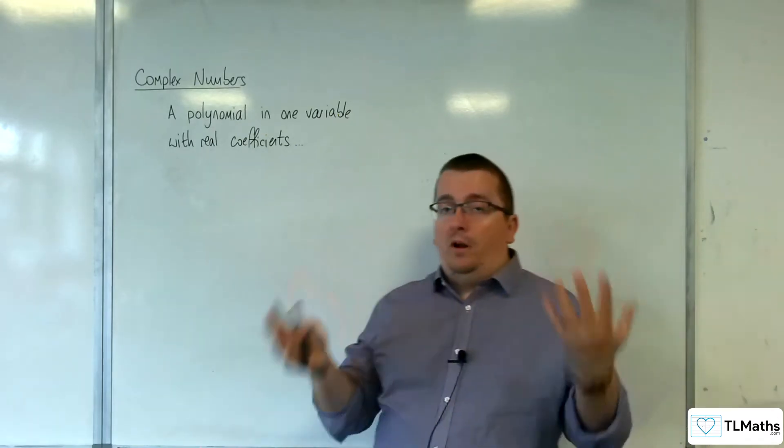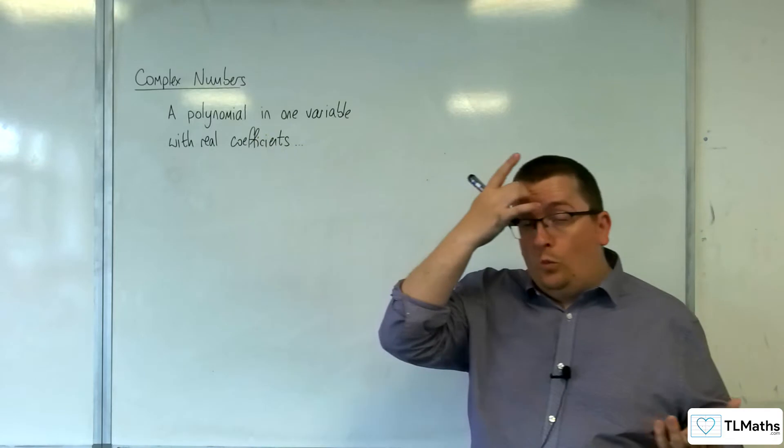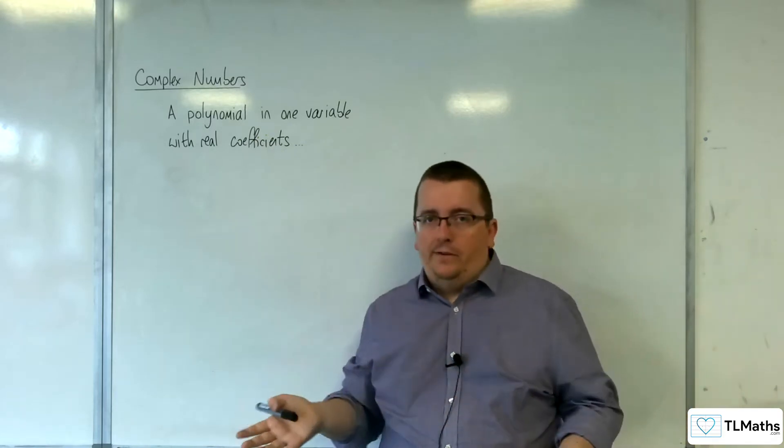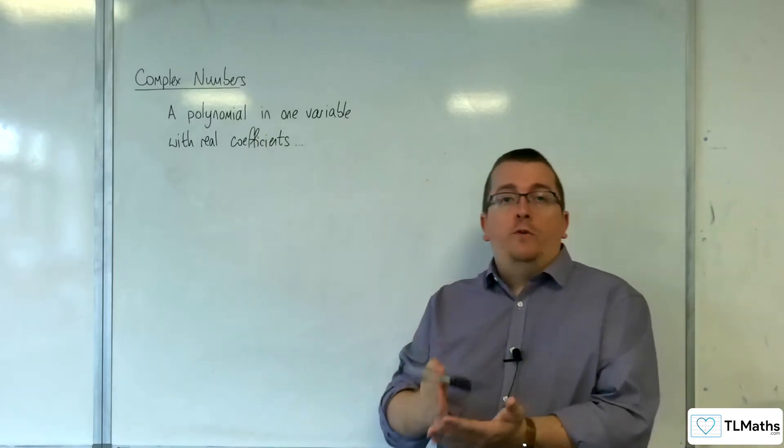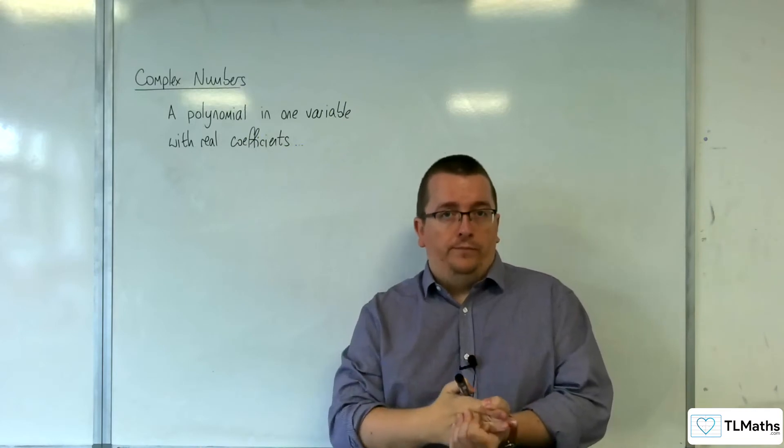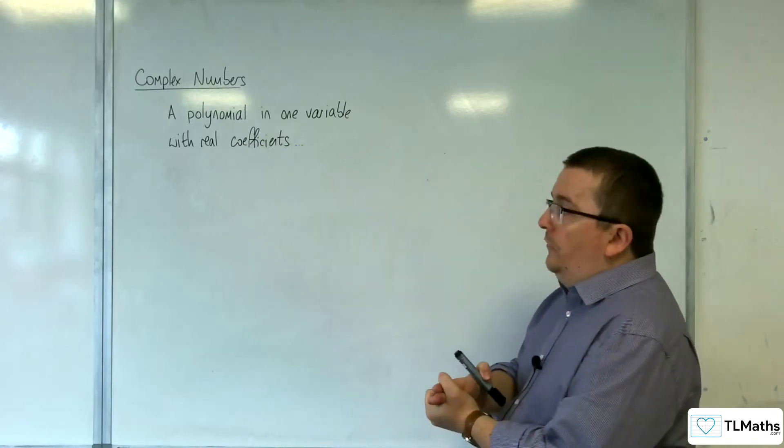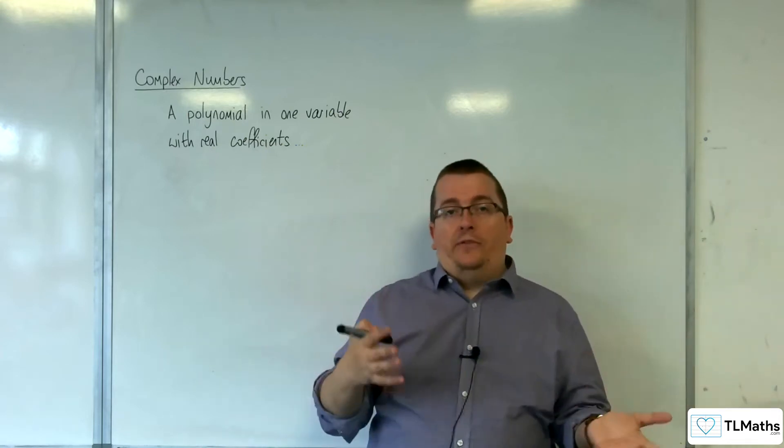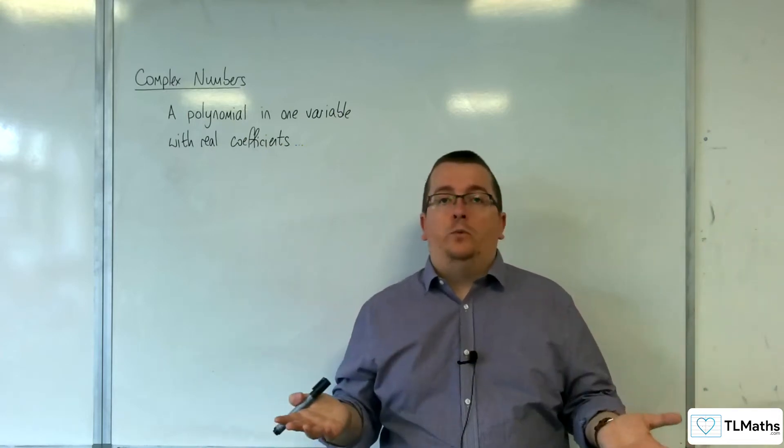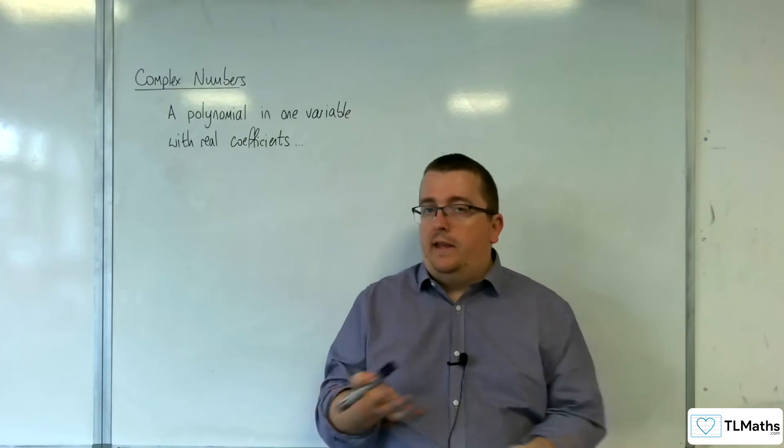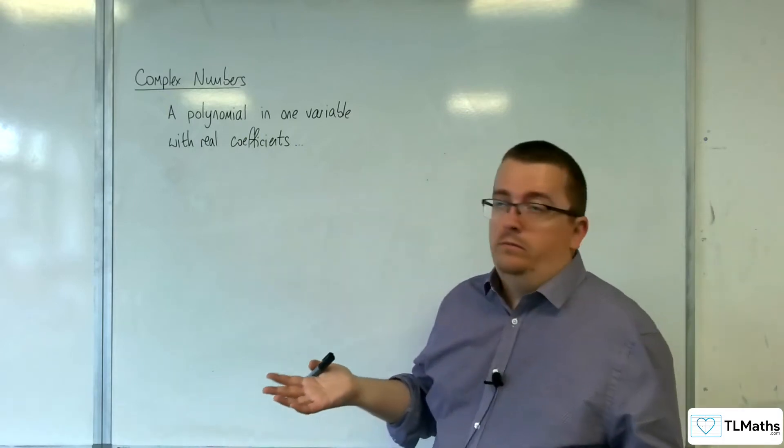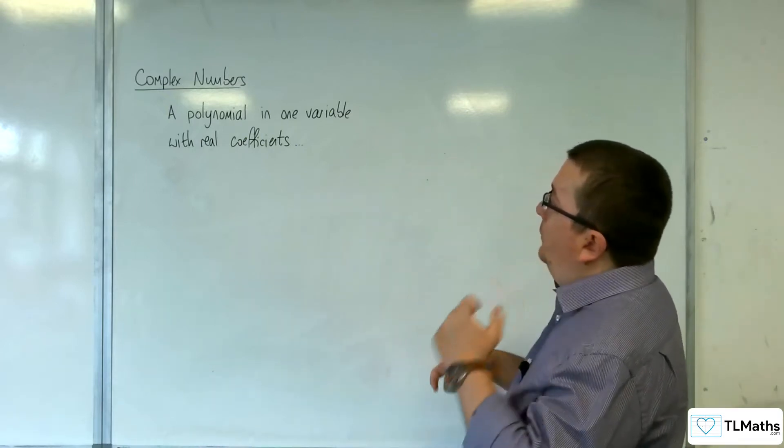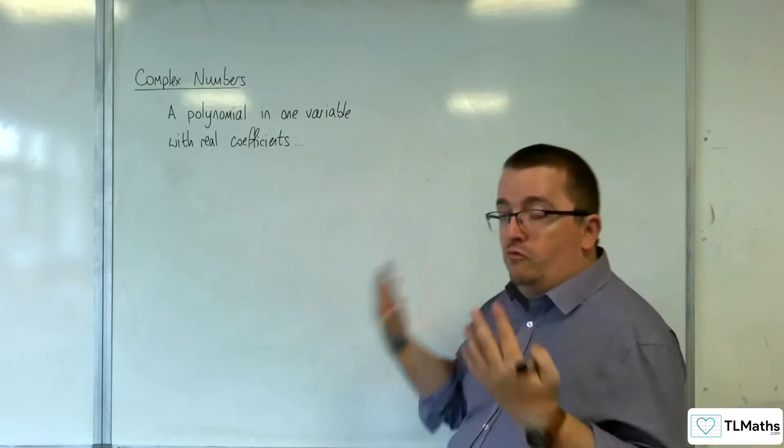So the idea is that you've got a polynomial in one variable, we'll work with Z, and the polynomial has real coefficients. So something like 3Z squared plus Z plus 5 equals 0, for example. A quadratic would be enough.